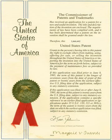A patent examiner reviews the patent application to determine if it meets the patentability requirements of that country. If the application does not comply, objections are communicated to the applicant or their patent agent or attorney through an office action, to which the applicant may respond. The number of office actions and responses that may occur vary from country to country, but eventually a final rejection is sent by the patent office, or the patent application is granted, which after the payment of additional fees, leads to an issued, enforceable patent.